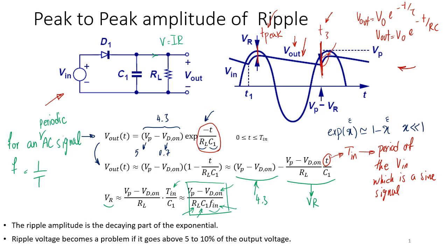Same with the capacitor: the bigger the capacitor, the more charge it stores, and the slower it discharges. We know that Q equals CV, so if C is increased, removing a given amount of charge Q from the capacitor causes a smaller change in voltage. From Q = CV, delta Q equals C times delta V. So if I take 1 coulomb of charge from the capacitor and C is larger, delta V is decreased — meaning changes in voltage, which is the ripple, are decreased.